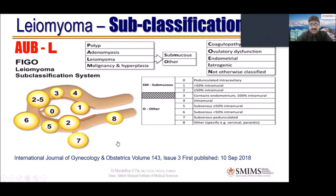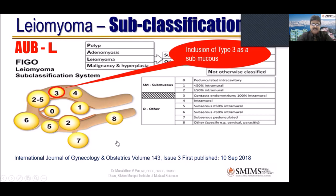This was the old classification. Now I am going to tell you the new classification — modifications or addendums — brought in September 2018. The first important addendum is the inclusion of type 3 as submucous. Type 3 is 100% intramural but just contacts the endometrium according to the old classification. Even though it is just contacting the endometrium, it is now included as submucous.